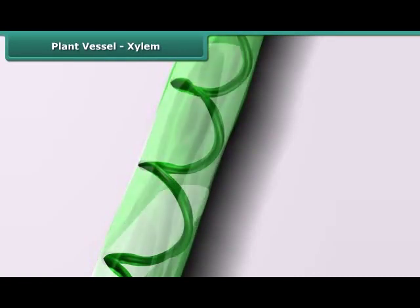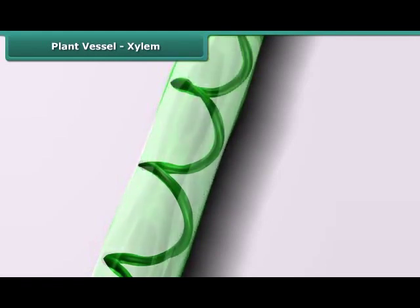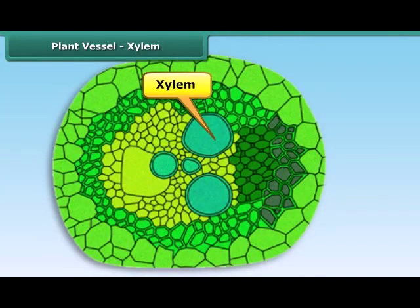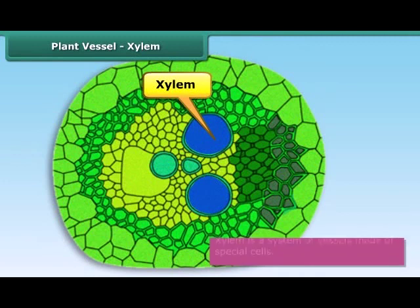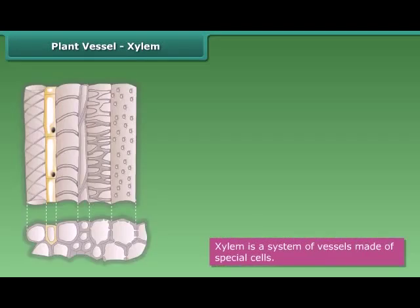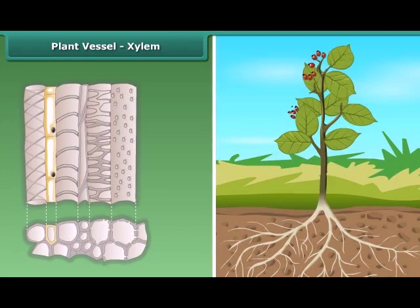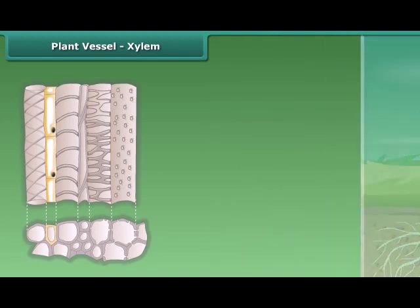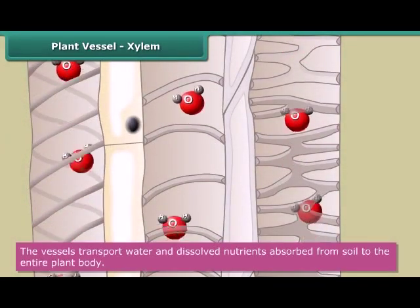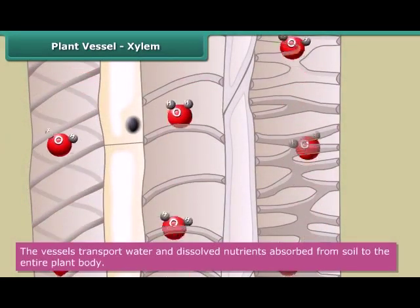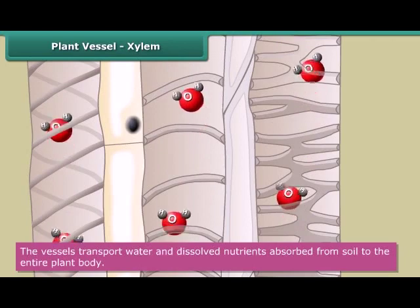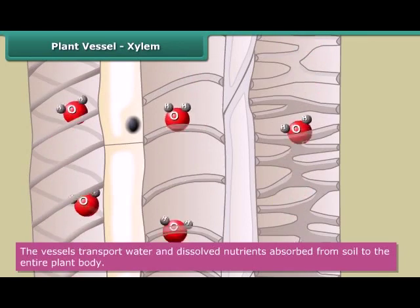A network of tube-like vessels runs through the entire body of a plant. This system of vessels is known as xylem. These vessels are made of special cells and act as channels that connect the roots to the leaves through the stem and the branches. Xylem transports water and dissolved nutrients absorbed from the soil to the different parts of the plant through this network of vessels.